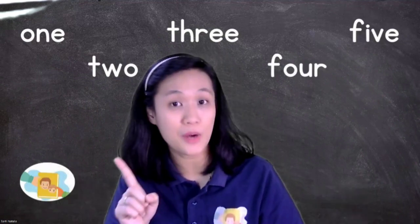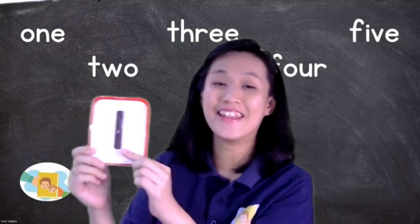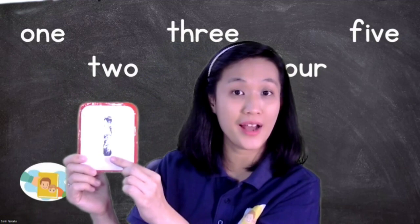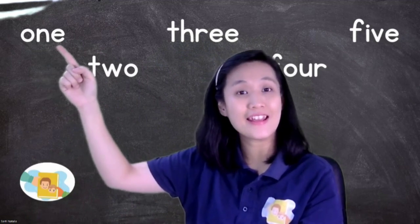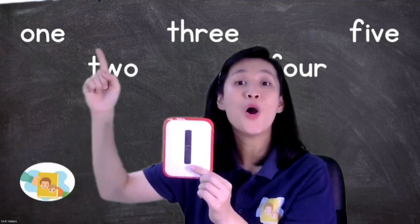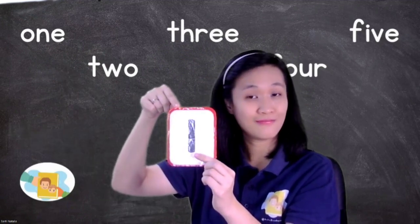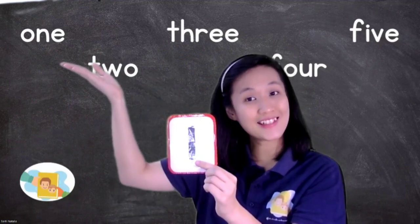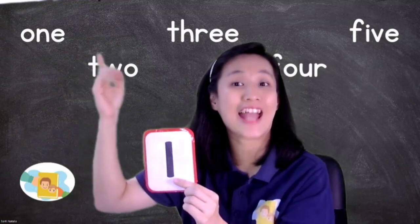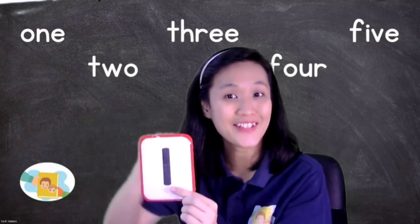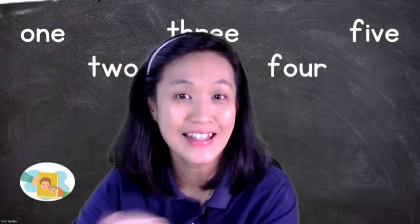A number word is a number but written in word form. For example, I have the number one — this is the number symbol of one. But the number word, you can see the letters: letter O, letter N, letter E — 'one'. This is a number word. You can't see a symbol, but you can see the word and the letters. Today we are going to learn number words one until five. I have a song for you — let's sing together first!